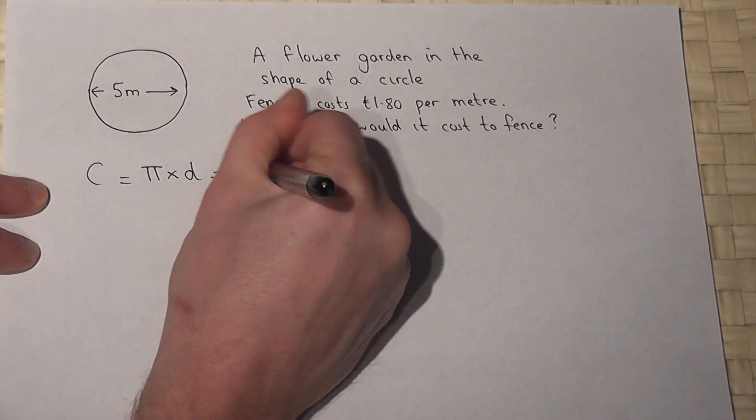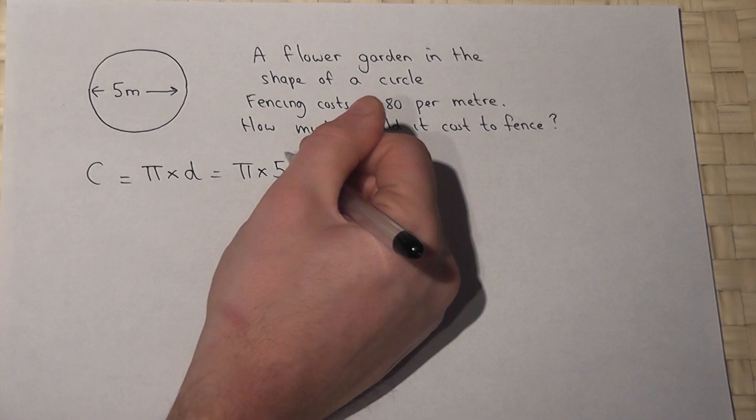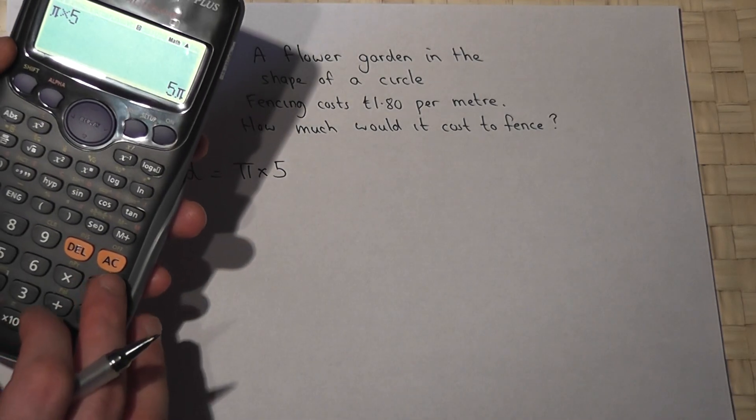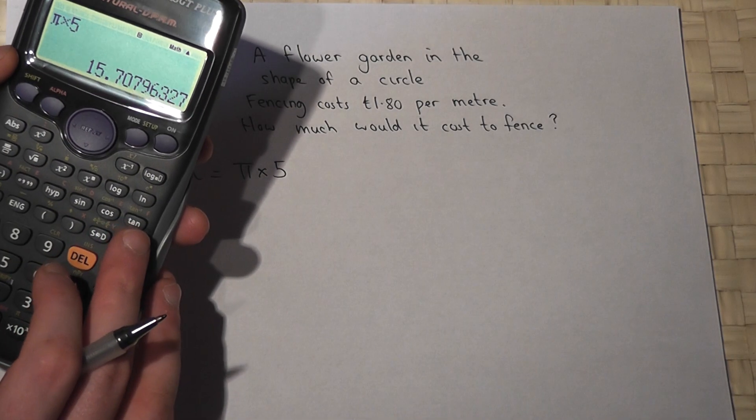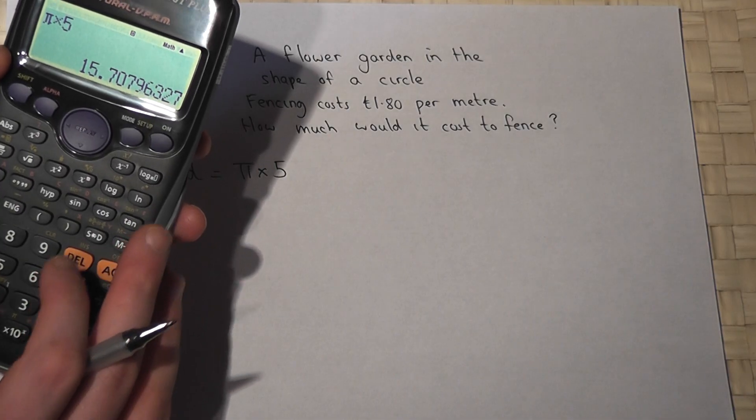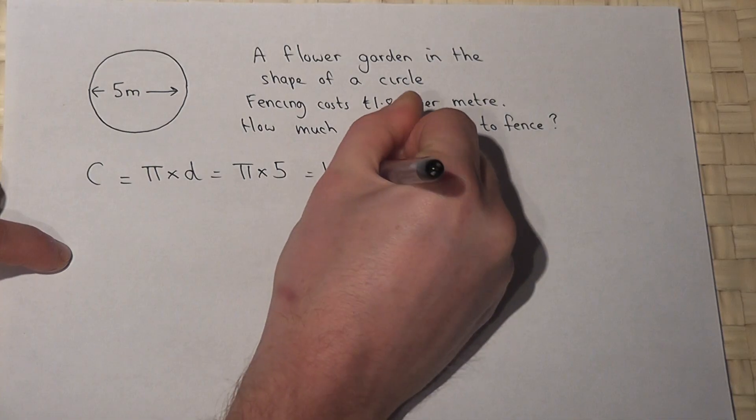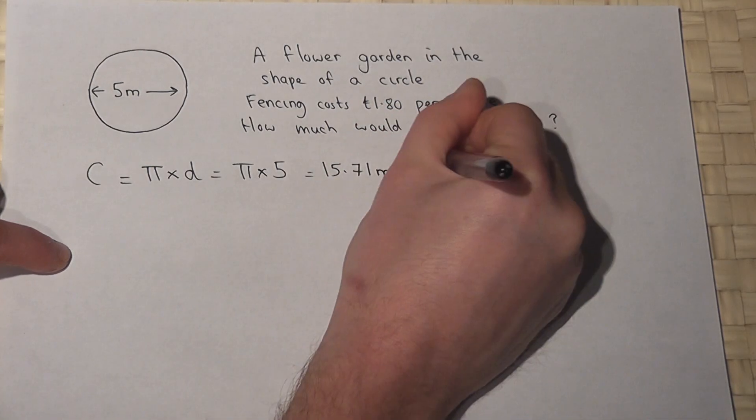which is pi times 5. So if I get my calculator and work out pi times 5, then that's 10.7, sorry, 15.71 metres to 2 decimal places.